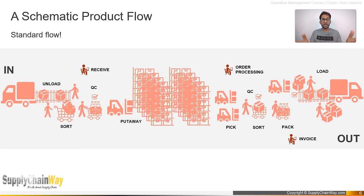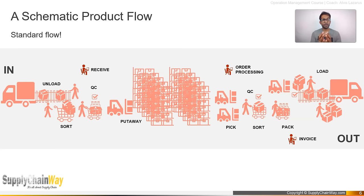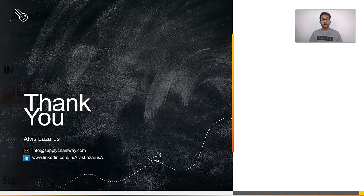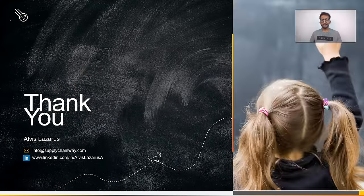This is what happens as inbound and outbound within the warehouse. This is the standard process, but QC requirements, when products become available for sale, and whether sorting is needed — all are case-by-case. Use this as a solid basic understanding of what happens in a warehouse. That's it for this session.